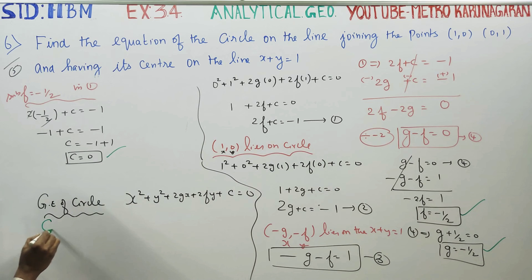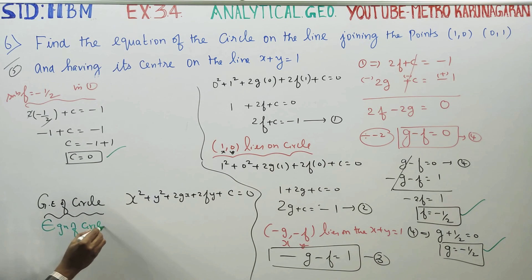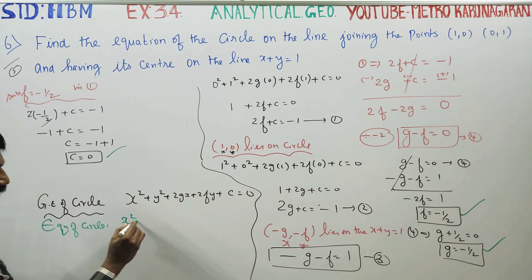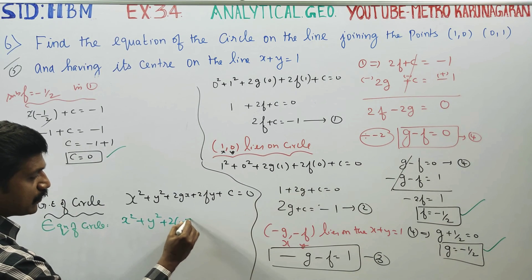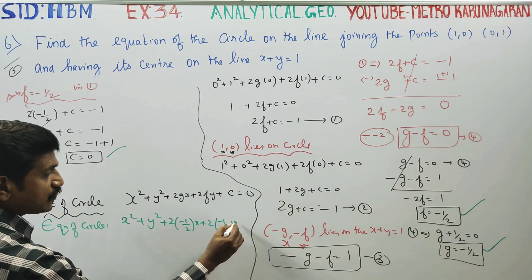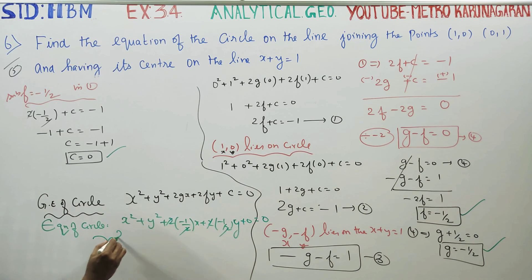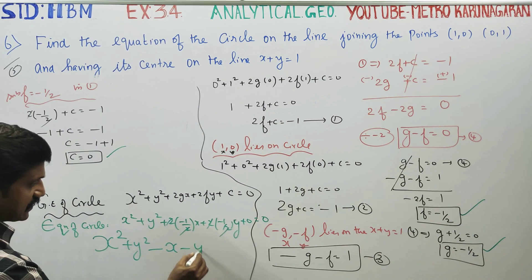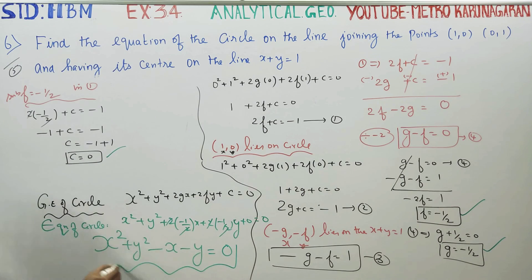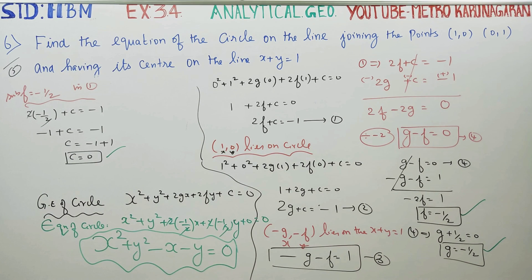Substituting g equal to minus 1 by 2, f equal to minus 1 by 2, and c equal to 0 into the general equation of circle: x² plus y² plus 2 into (minus 1/2) into x plus 2 into (minus 1/2) into y plus 0 equal to 0. Therefore the final equation of circle is x² plus y² minus x minus y equal to 0.